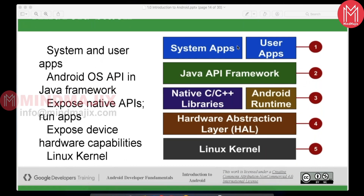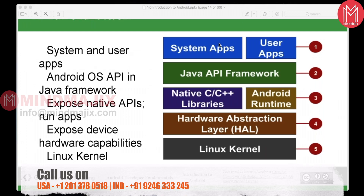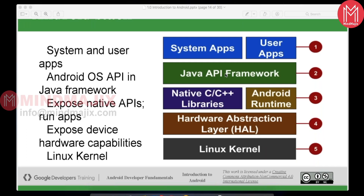System applications are the default apps on an Android device — like contacts, call, messaging, and camera apps. User applications are the custom applications we develop. There is also the Java API Framework — earlier using Oracle JDK, now using OpenJDK platform. The coding is similar to Java and communicates through the Java API framework. Android also supports native C/C++ libraries through the NDK.